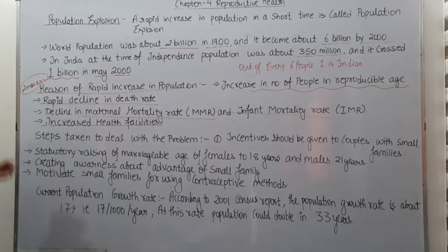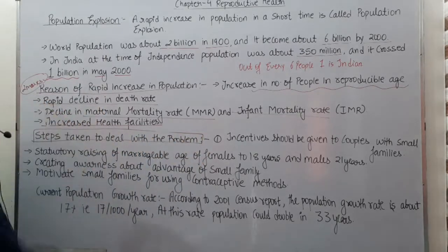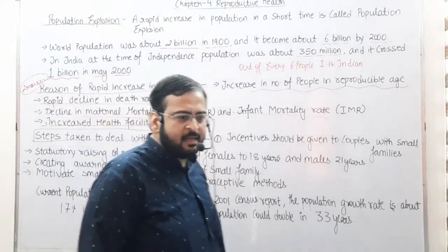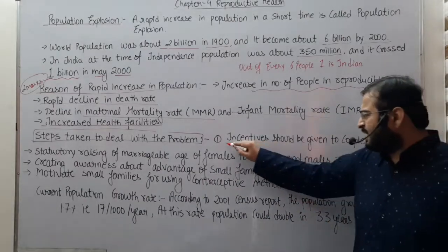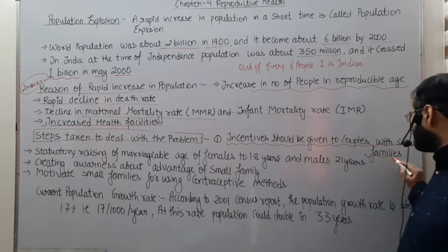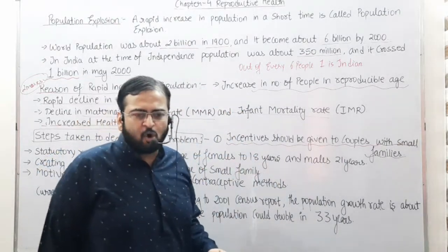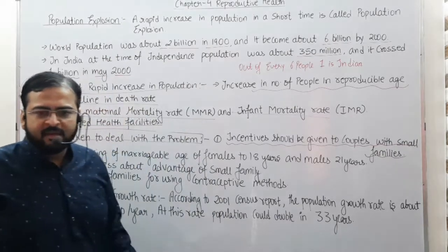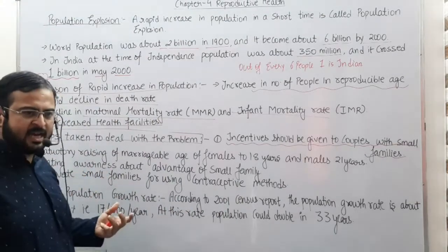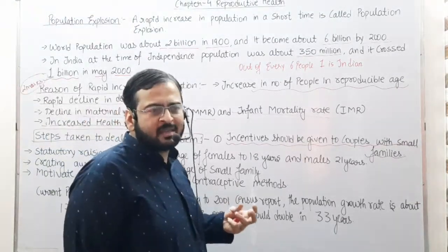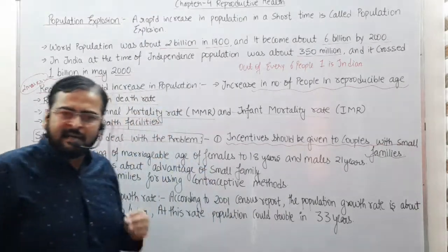Next topic: steps taken to deal with the problem of increasing population. The first step is that incentives should be given to couples with small families. Couples who have fewer or no children should receive some incentives from the government, which will motivate them not to have more children.